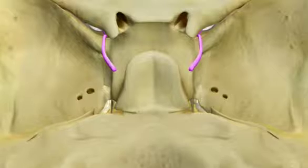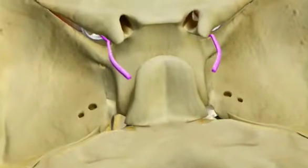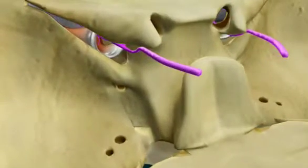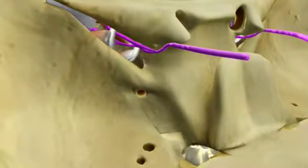The oculomotor nerve courses from the brain through the middle cranial fossa and traverses the superior orbital fissure to enter the posterior orbit.